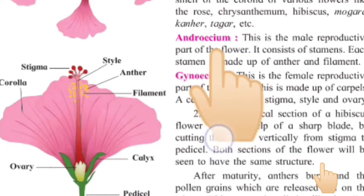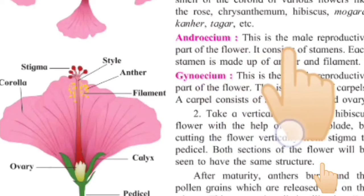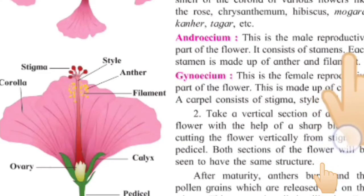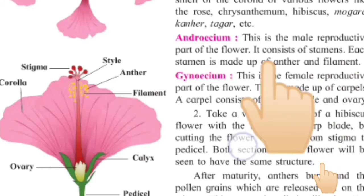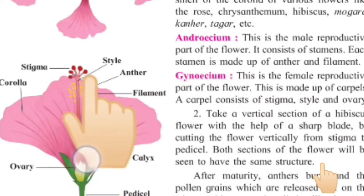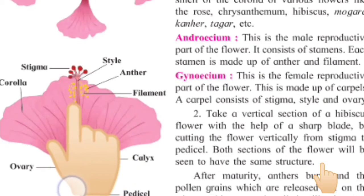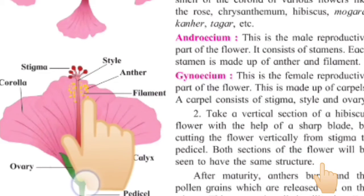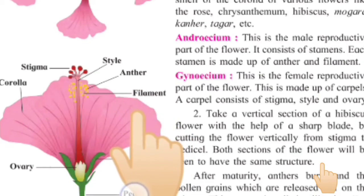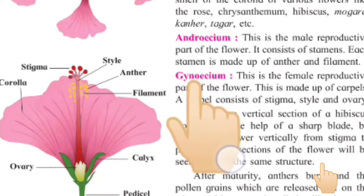Now comes the androecium part. It is the male reproductive part of the flower. It consists of stamens. Each stamen is made up of an anther and a filament. Looking at the hibiscus, the yellow filaments represent the androecium. The anther and filament together form the stamen.